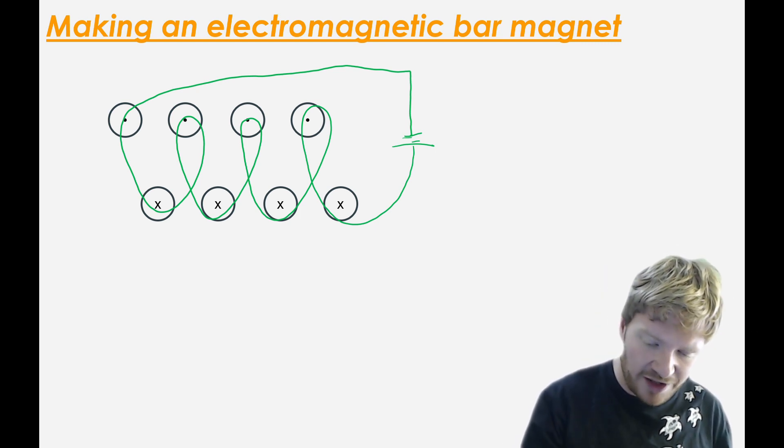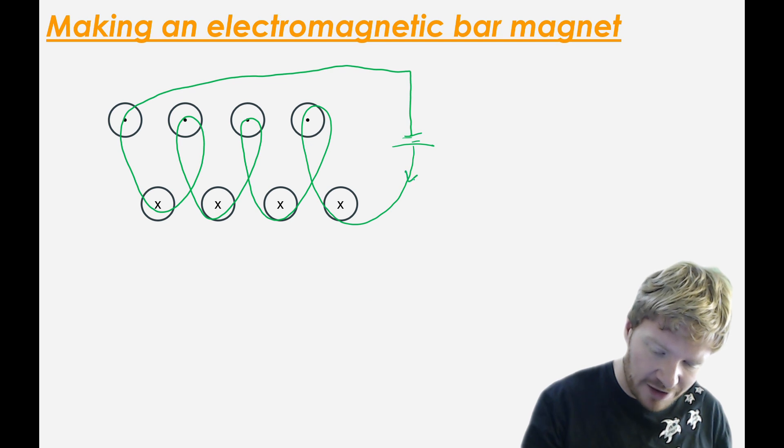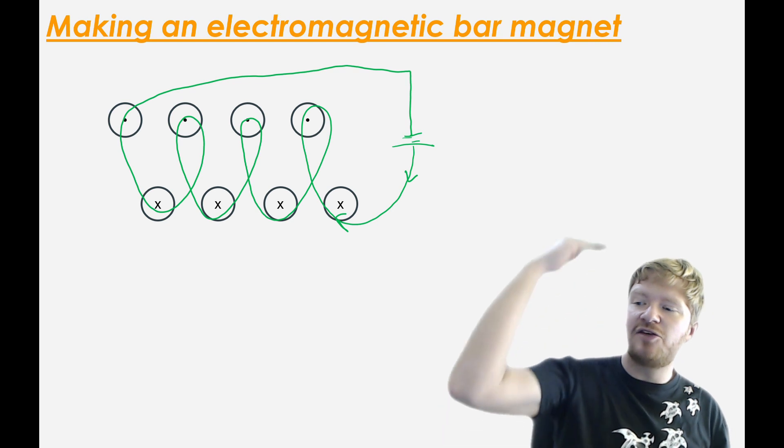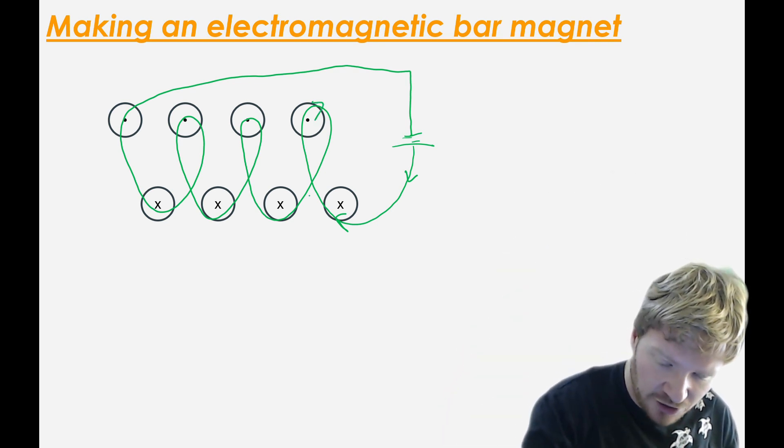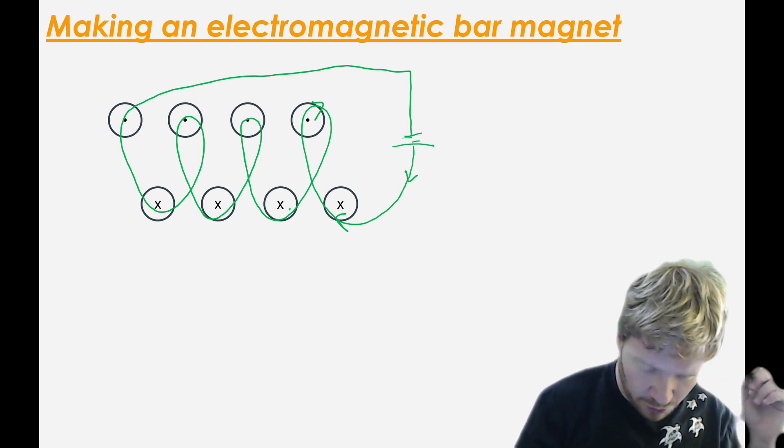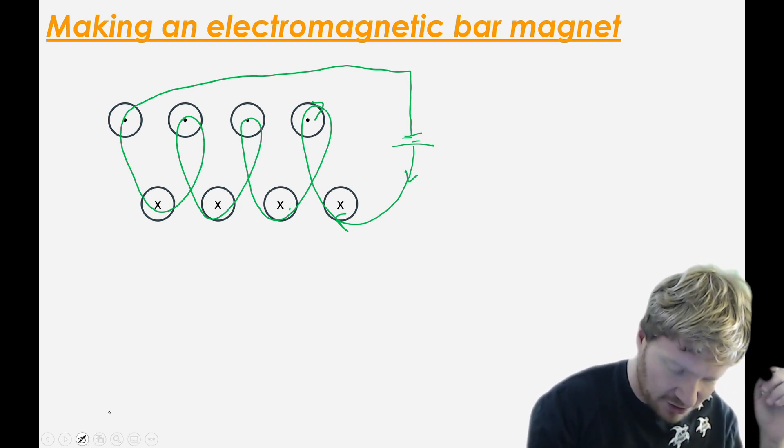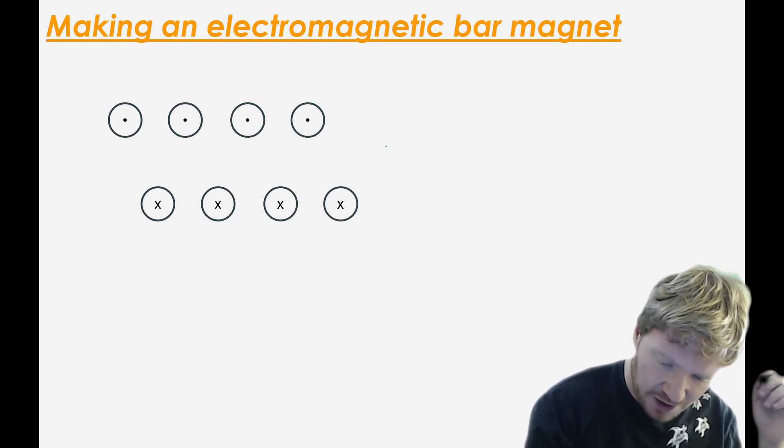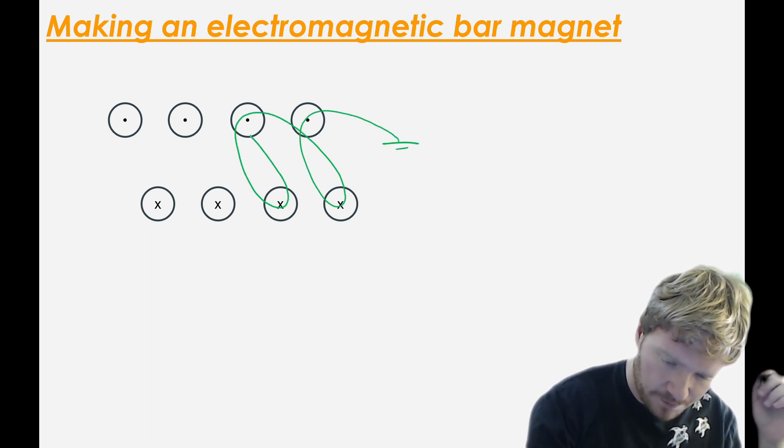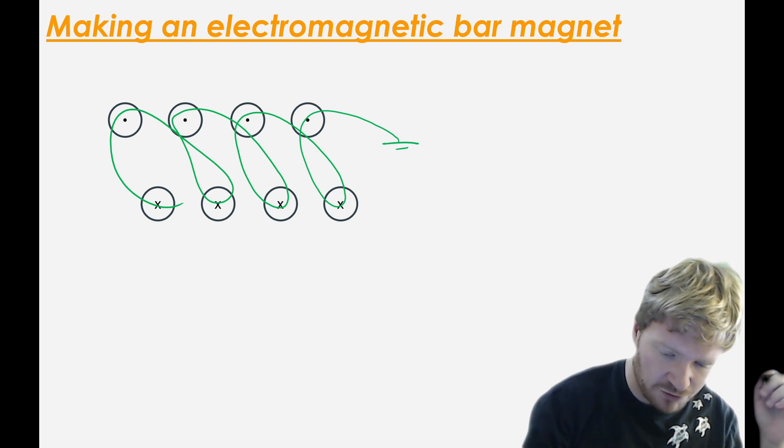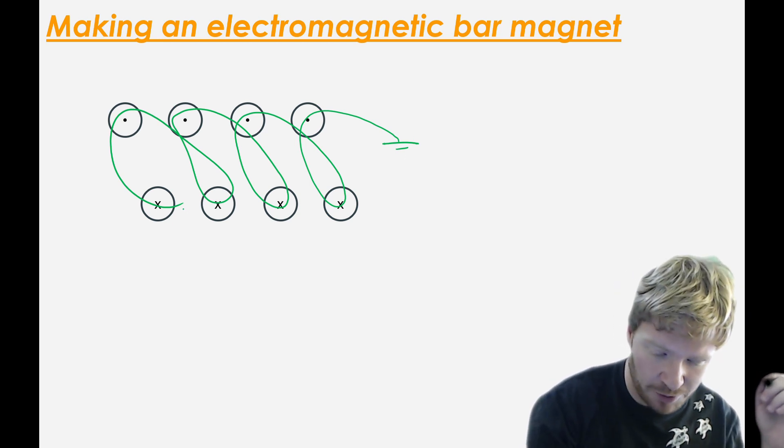So what that means, if you imagine that the current is coming out that way and it's coming out of the page then and it's looping back and going into the page there. So I've actually drawn this the wrong way around. Let me erase it all and start again. We want to do it that way, don't we? So it's really badly drawing, but don't worry, I will give you a proper version in a second.